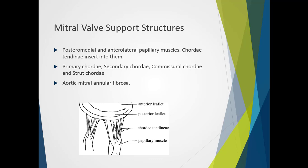There are a number of different chordae. There are primary chordae, which run from the papillary muscle and insert into the leaflet. There are secondary chordae, which bifurcate from the primary chordae and run through the leaflet. There are commissural chordae, which reach both anterior and posterior leaflets. And there are also strut chordae that arise from the ventricular wall and insert into the leaflet.